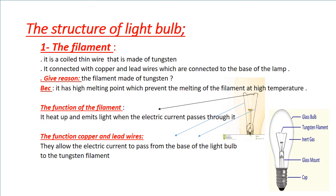Number one, the filament. Filament is a coiled thin wire which is made of tungsten. Why is the filament made of tungsten? Because it has a high melting point which prevents the melting of the filament at high temperature. The filament is connected with two wires to the base of the lamp. The function of the filament is to heat up and emit light.